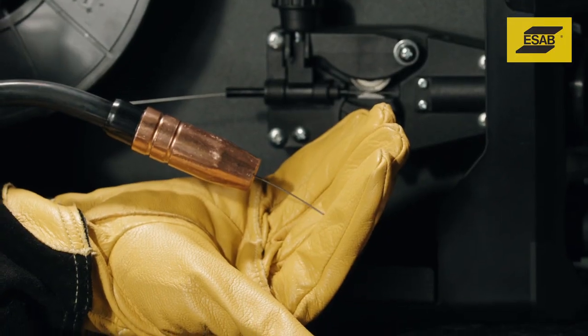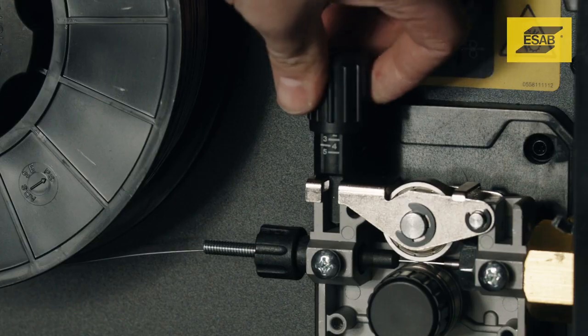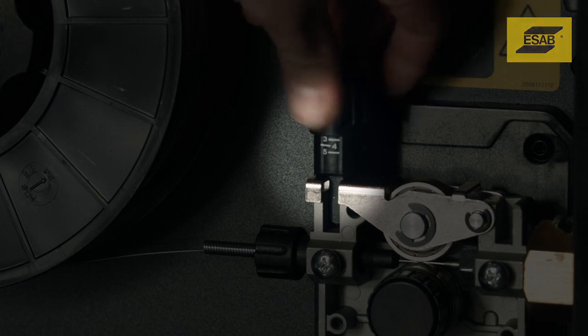If the wire stutters because the feed rolls slipped, add tension in half turn increments. Use the scale on the tension arm and make a note of the setting.